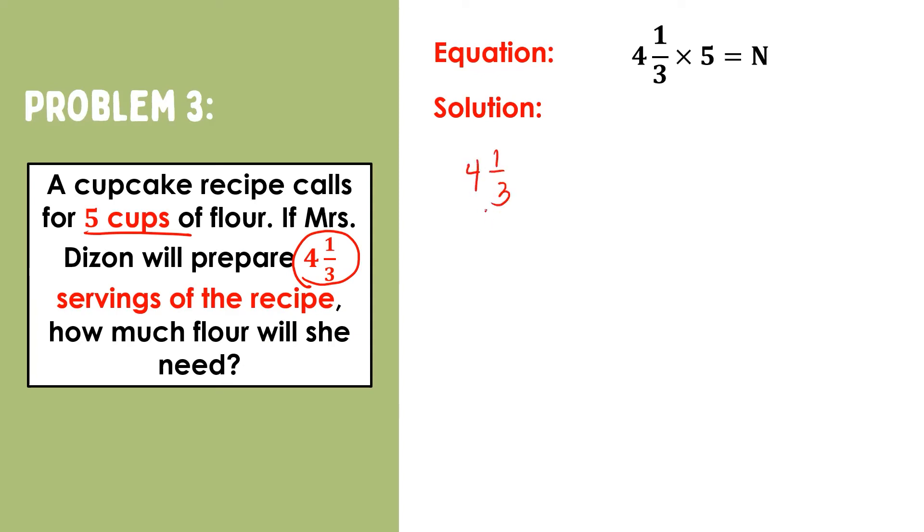So, let us rewrite four-and-one-third. Three times four is twelve, plus one, that is thirteen. Copy the denominator, that gives us thirteen-thirds.